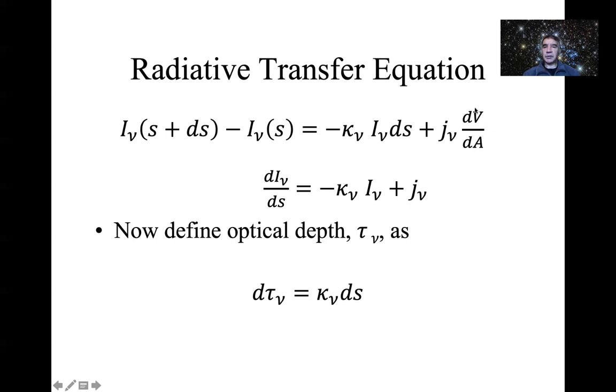We can simplify this equation. The volume of our cube, dV, is just dA times dS, so that will just simplify down to dS. We can bring the dS over to the other side. In the limit when dS becomes small, this becomes the derivative, the rate of change of intensity with s, the path length through the medium. And it's just given by minus kappa nu times the intensity plus the emissivity. So that is one way of writing what we would call the radiative transfer equation, which describes how intensity changes as a function of distance through a cloud.